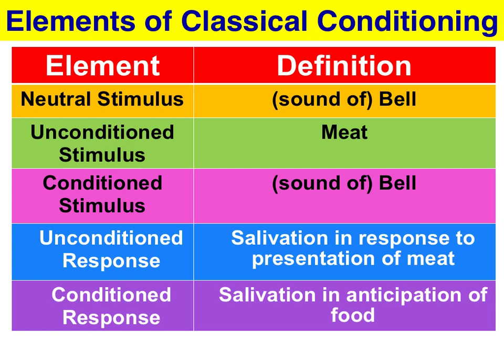Solution: the neutral stimulus was paired with the unconditioned stimulus. The neutral stimulus must be presented just prior — a few seconds — to the presentation of the unconditioned stimulus, so that the dog makes the association between the two previously unrelated stimuli. The unconditioned stimulus — meat — reflexively evokes the unconditioned response. But then, after seven pairings, the conditioned stimulus, when presented on its own — the sound of a bell — reflexively evoked the salivation in anticipation of food. That is, the dog had learned to make the association between the sound of a bell and the subsequent presentation of food.